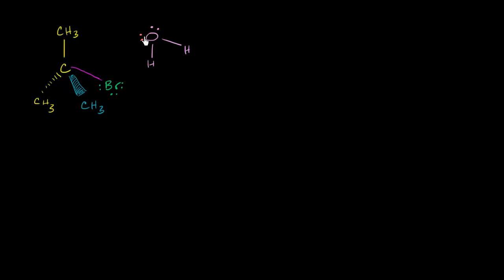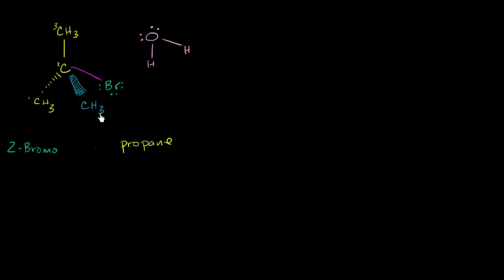So what do we have right here? Well, this is just a water molecule. And this right over here, we have one, two, three carbons in our backbone. So this would be propane — we have all single bonds. And then on the number two carbon, I have both a methyl group and a bromo group. Bromo comes before methyl in alphabetical order, so I could write this as 2-bromo-2-methylpropane.